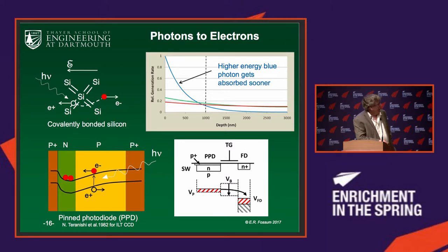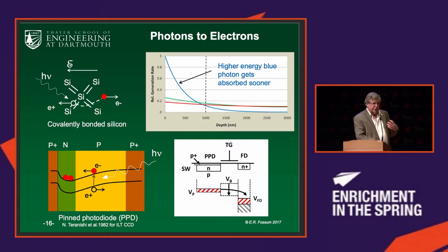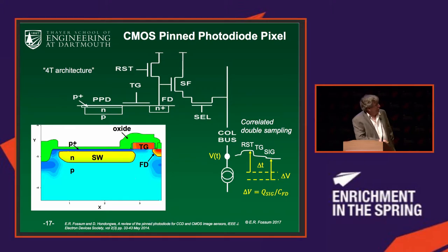This structure is called a pinned photodiode, invented by Nobu Teranishi in 1982 during the period when the Japanese were developing CCDs for consumer applications. In cross-section, the storage well area is the bottom of the swimming pool. A photon comes in, generates an electron, and the electron flows to the bottom of the storage well and waits there until readout. We read it out by pulsing a transfer gate MOSFET: applying a positive voltage pulls the electron out of the storage well over to a floating diffusion where we can measure how much charge comes out.